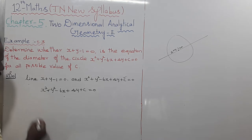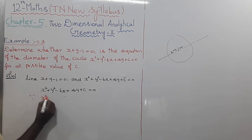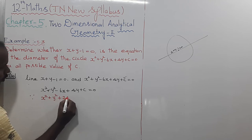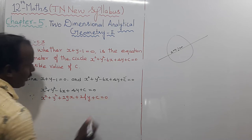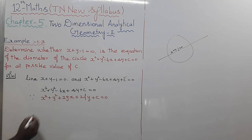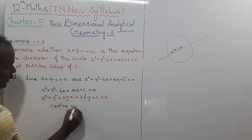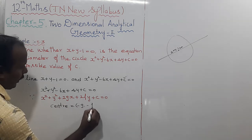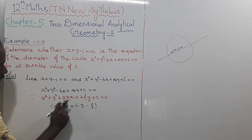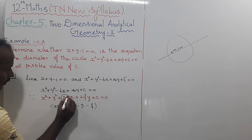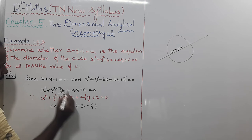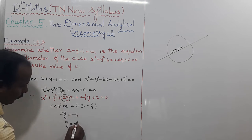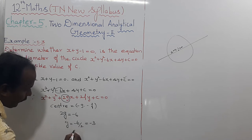Using the standard general form of a circle: x squared plus y squared plus 2gx plus 2fy plus c equals 0, the center formula is minus g comma minus f. To find g, we look at the coefficient of x, which is 2g. So 2g equals minus 6, giving g equals minus 6 divided by 2, which equals minus 3.